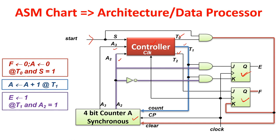When in state T0 and S=1, the red line shows K=1 being made. For a JK flip-flop, if K=1 it will reset the output to 0, making output=0 (J=0, K=1 makes it 0). In state T1: A = A+1 is done — incrementing. You can see the blue line incrementing the count. When in state T2, E is set to 1 — E=1 when T1 and A2=1.